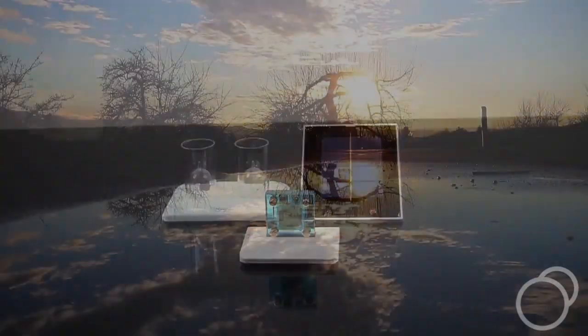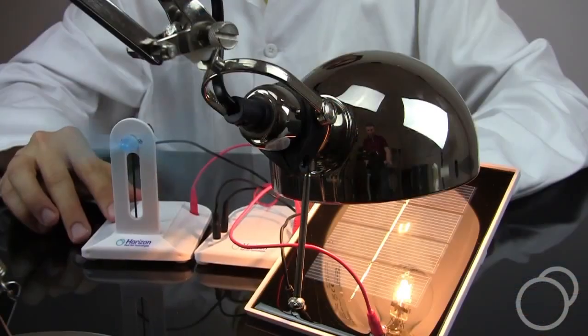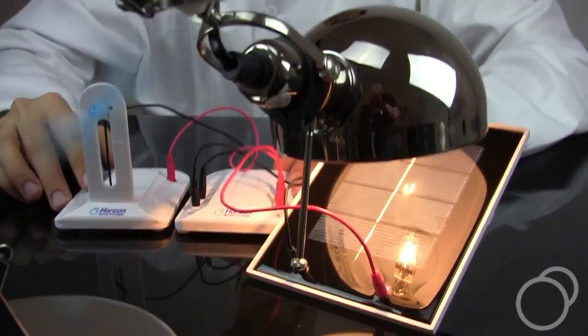The solar cell converts light from the sun or a normal desk lamp if it's cloudy into electricity.